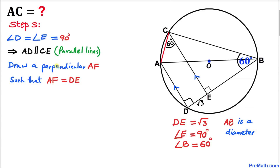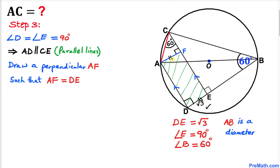Now we are going to draw a perpendicular AF, where F is a point on DE, such that this angle is 90 degrees. Moreover this line segment AF equals DE, giving us a rectangle ADFE. Since DE equals square root of 3, this side length AF is square root of 3 as well.